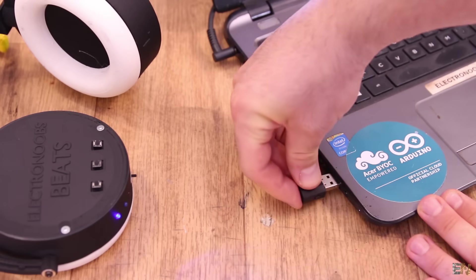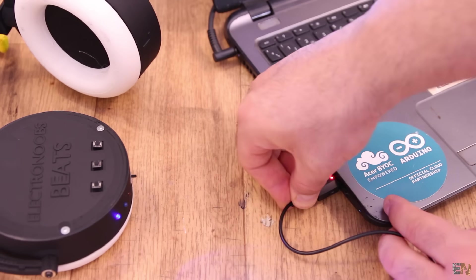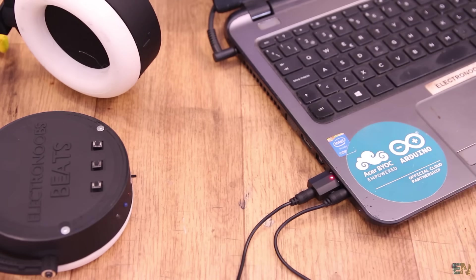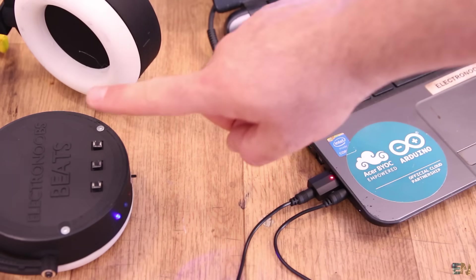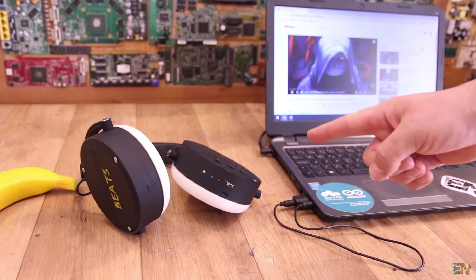This small transmitter here will be connected to my PC, to the USB connector for power and to the jack audio output. It will then connect to my headphones and send the sound.